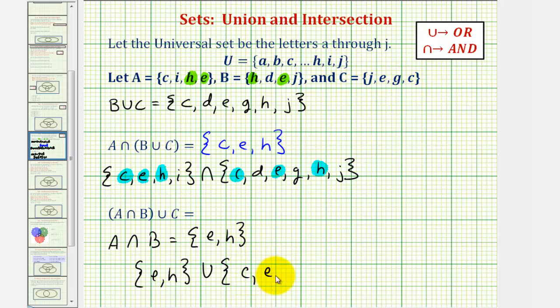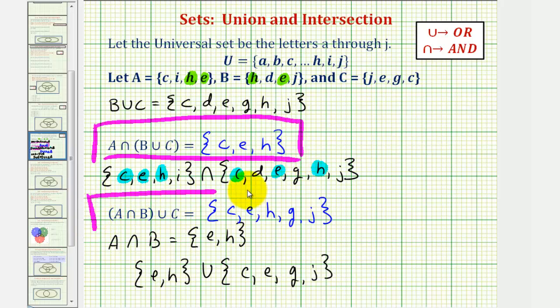So we have C, E, G, and J. We want the union of these two sets, meaning we want the elements in this set or this set. So we combine these two sets into one. So we would have C, E, H, G, and J. I hope you found this helpful.